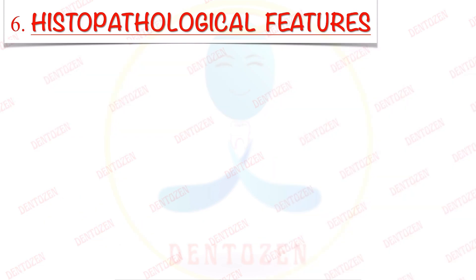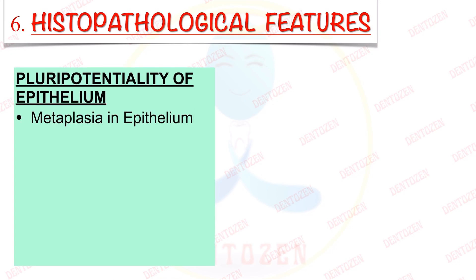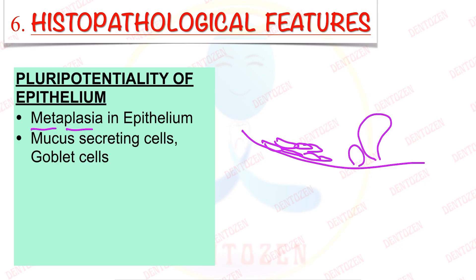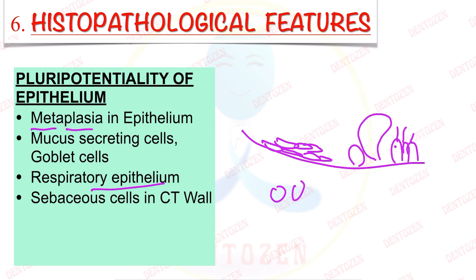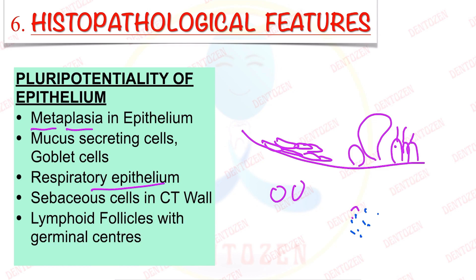The epithelium has pluripotential nature — the flat cells can change into other cell types: mucus cells or goblet cells, respiratory epithelium (pseudostratified ciliated columnar cells), or lymphoid cells with germinal centers. All these represent the pluripotential changes in the cyst epithelium.